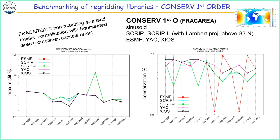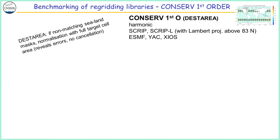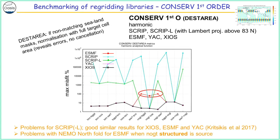We have two SCRIP variants because you can apply a Lambert projection above a certain threshold, so we benchmarked with and without this projection. Regarding conservation, everything seems okay as those numbers are very small. With the other type of normalization — one that does not cancel the error — you see right away that something is happening with the ESMF library, and something is also really wrong with the SCRIP library. But there's something very specific happening with ESMF when the source grid is the NEMO grid.